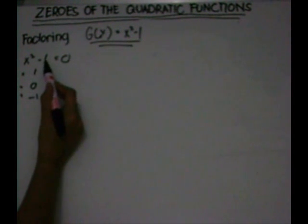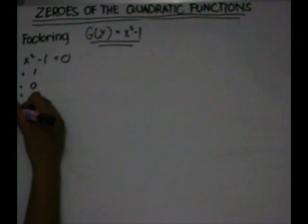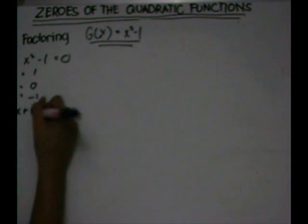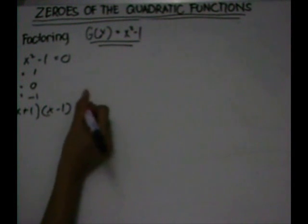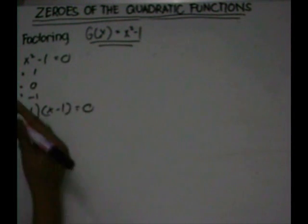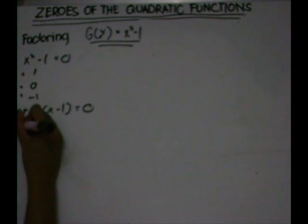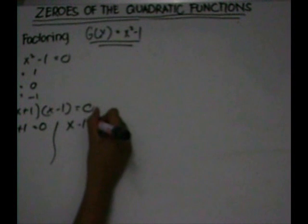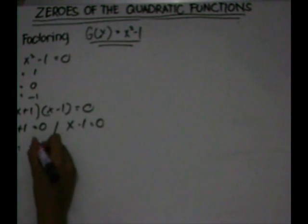The next thing we're going to do is to factor this. This factor will be x plus one times x minus one is equal to zero. Then we'll equate each factor to zero: x plus one equals zero, and x minus one equals zero. We get x is equal to negative one, and x is equal to one.